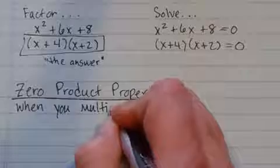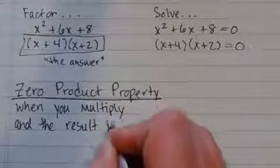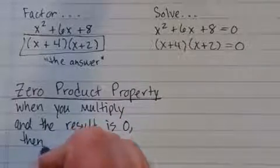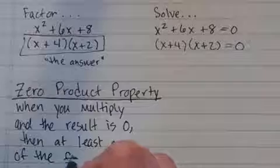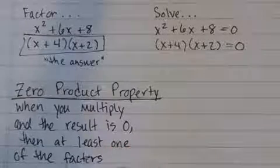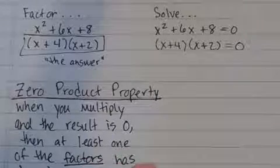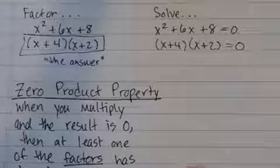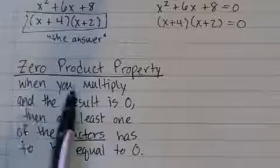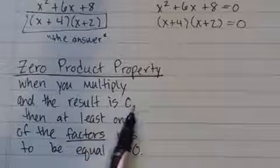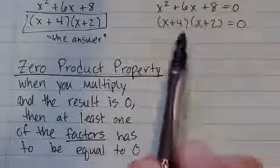So when you have two things times each other that equals zero, one or the other thing has to be zero. So that's the zero product property in a nutshell. When you multiply and the result is zero, then at least one of the factors, factors is a good term we'll talk about in a second, has to be equal to zero.